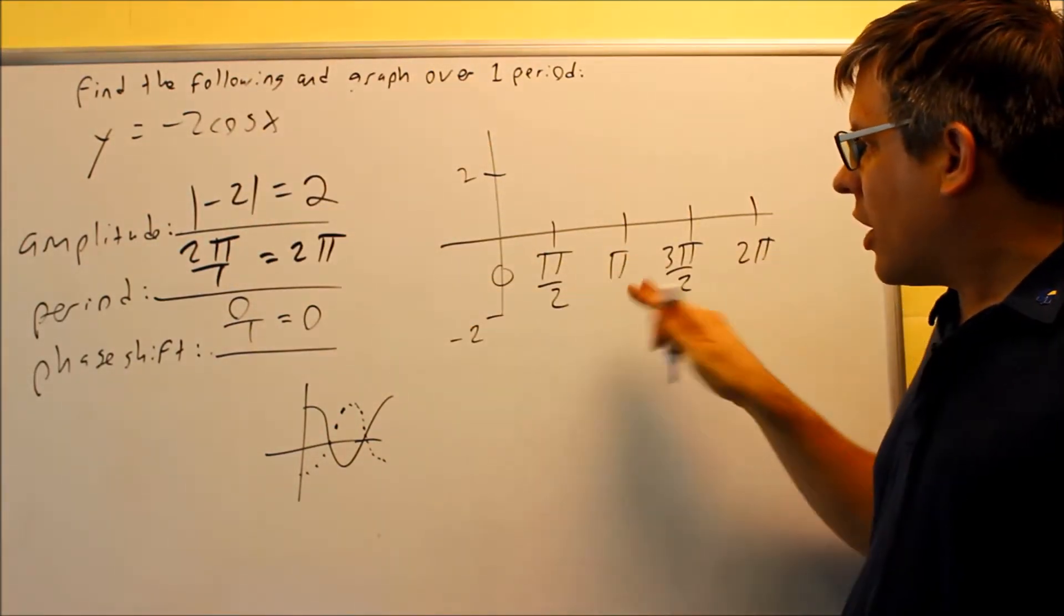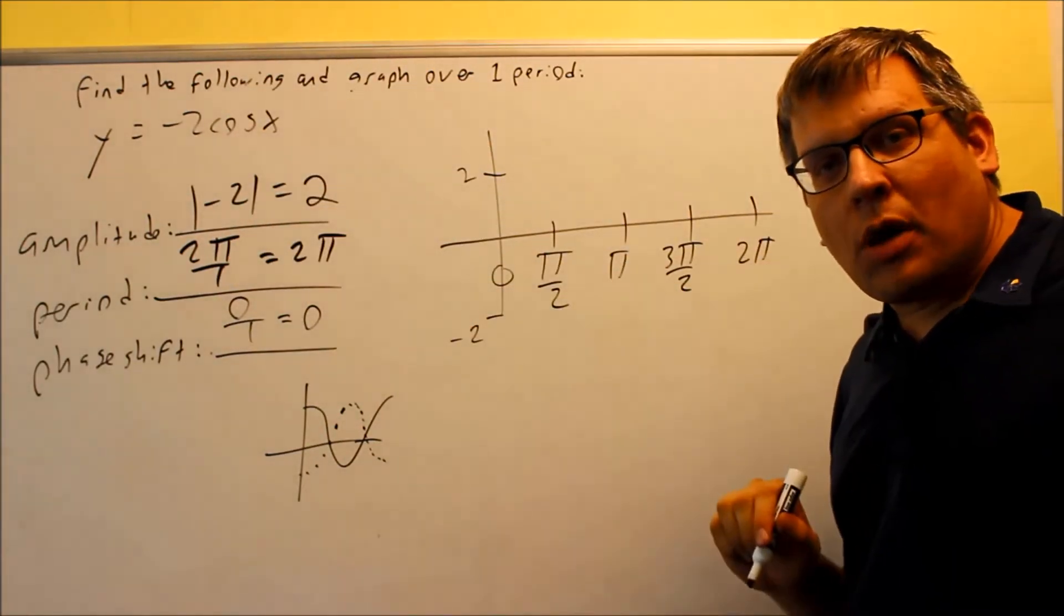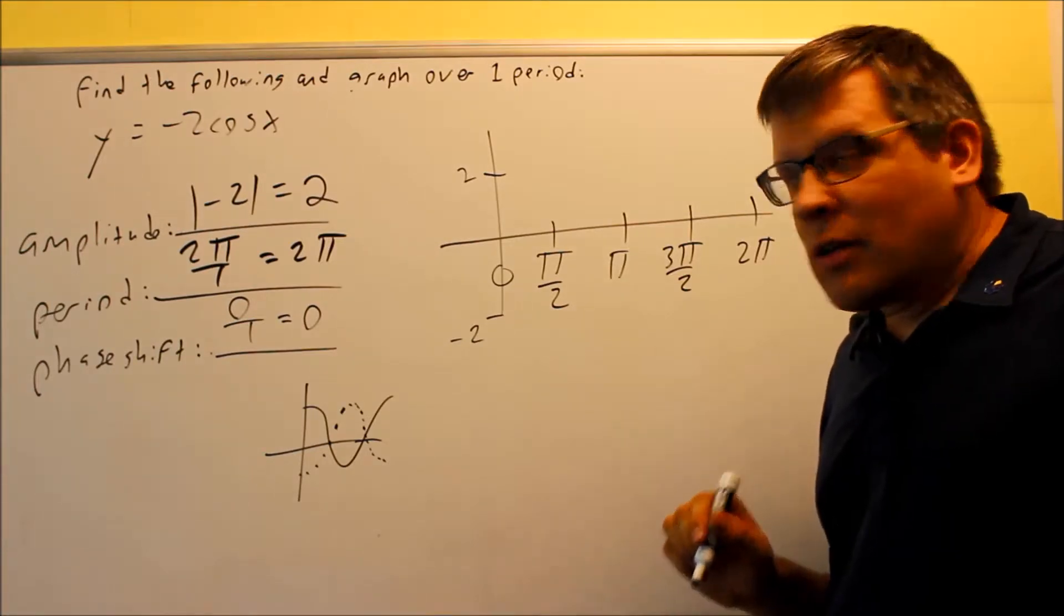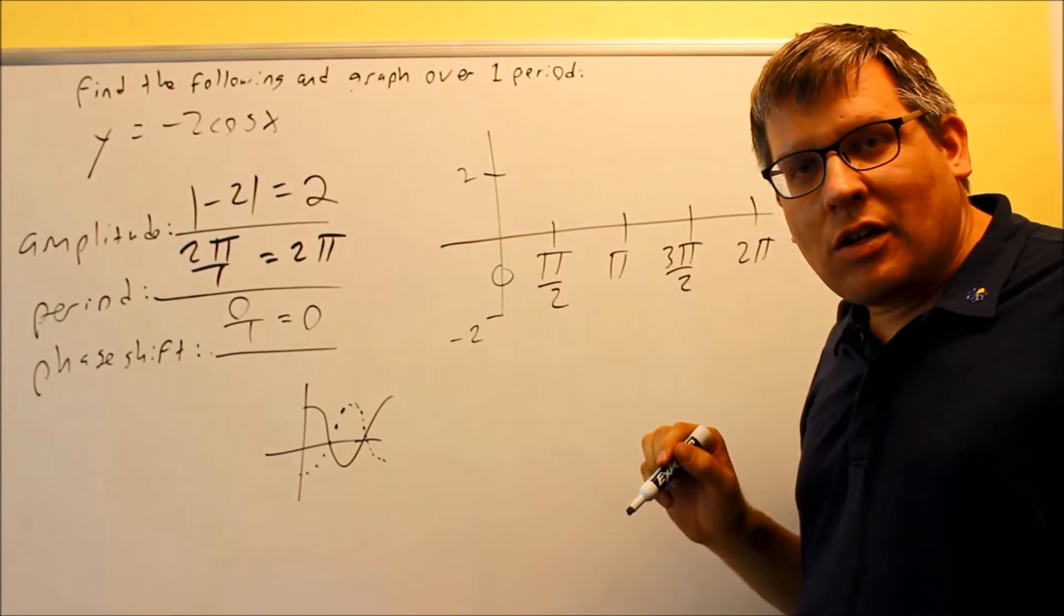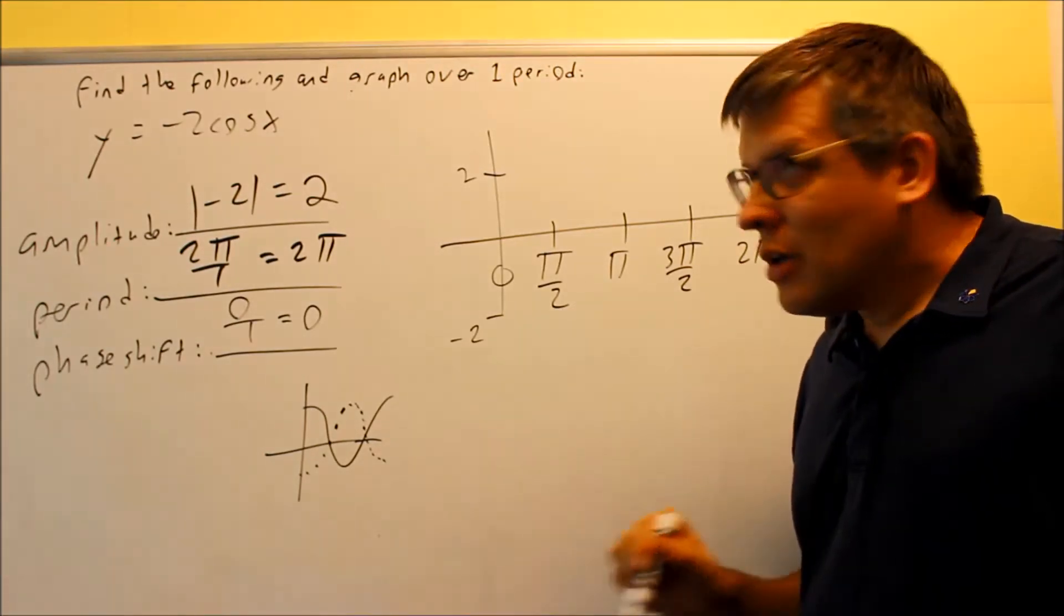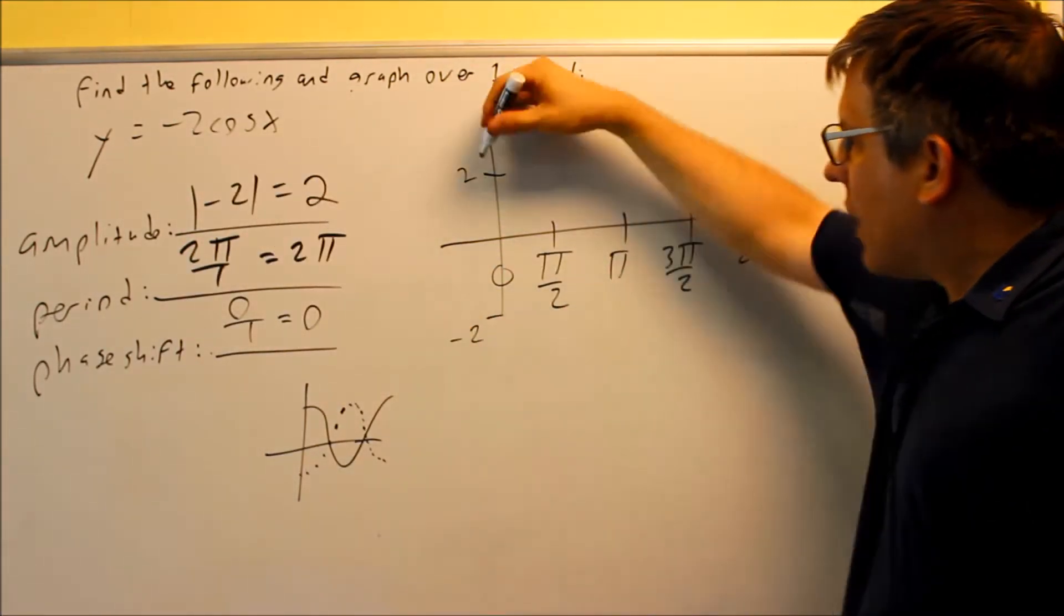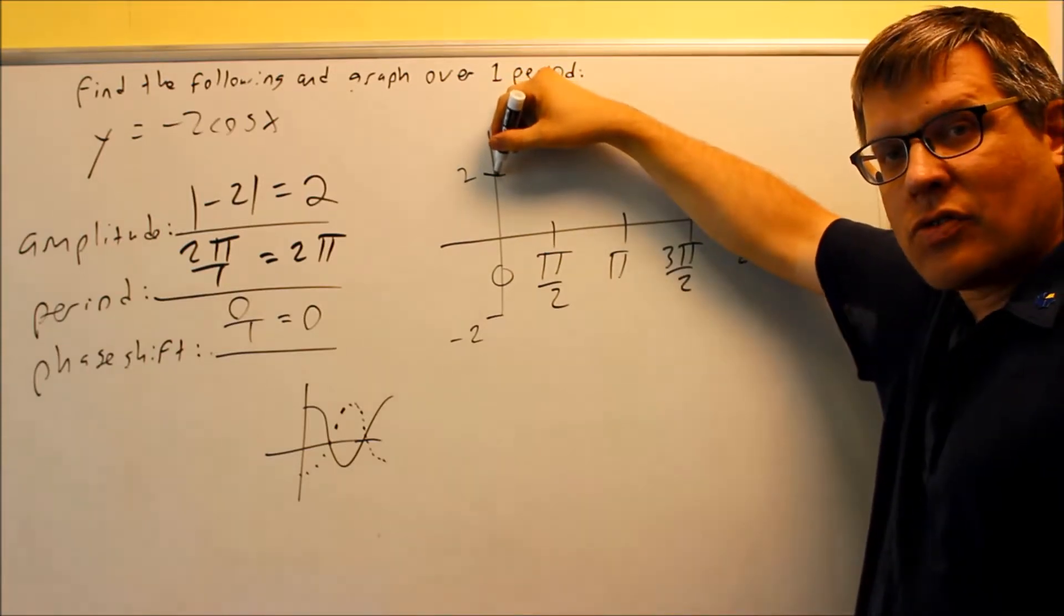So that's what the graph has to look like here. Now the easy way to remember where you start that off at is whatever number you see in front of the cosine, that's automatically where the graph is going to begin. If I see a positive 2, I would start the graph up here at positive 2.